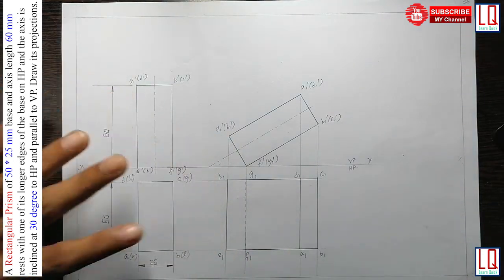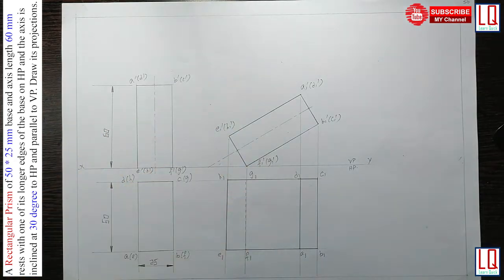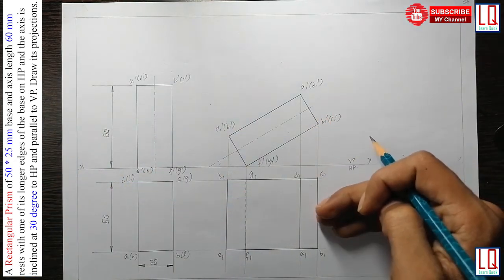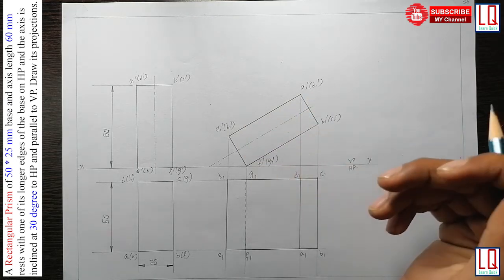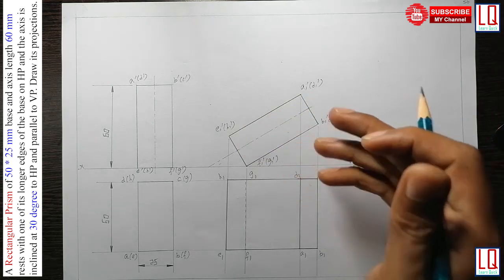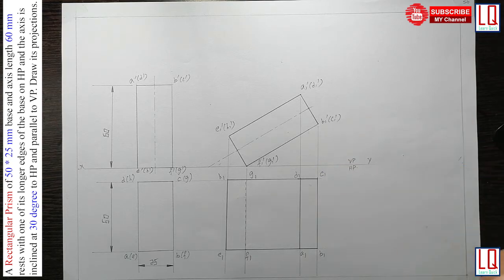So now we have completed the step 1, step 2, step 3 and step 4. Step 3 and step 4 are the final projection in front view and top view after inclining the axis for a given angle, that is 30 degree. Let's quickly dimension the angle.